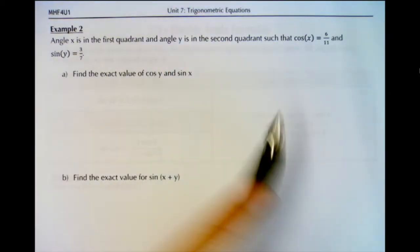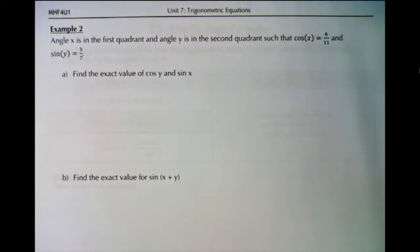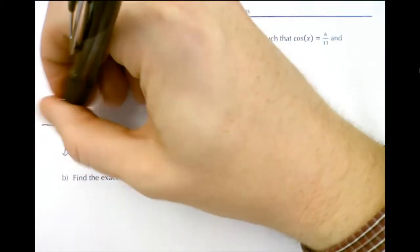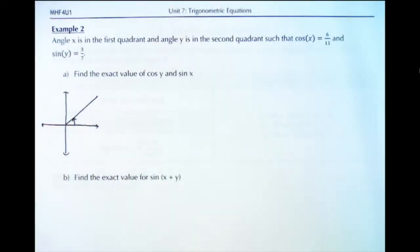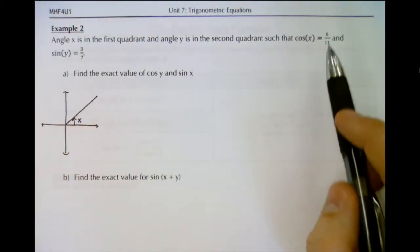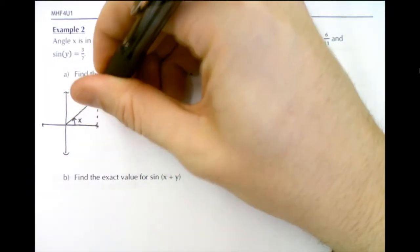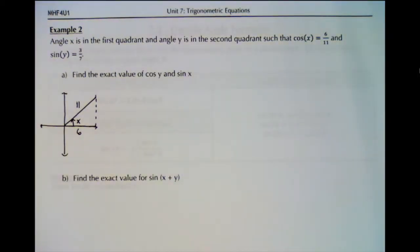In order to find sine x plus y we need all four combinations. Let's start with cos y and sine x. Angle x is in the first quadrant, so I'm going to graph an angle in the first quadrant. We know that cosine of x is 6 over 11. Cosine is adjacent over hypotenuse, so the adjacent side is 6 and the hypotenuse is 11.